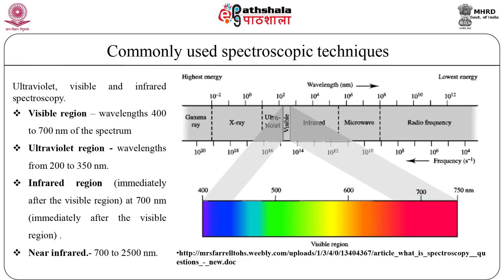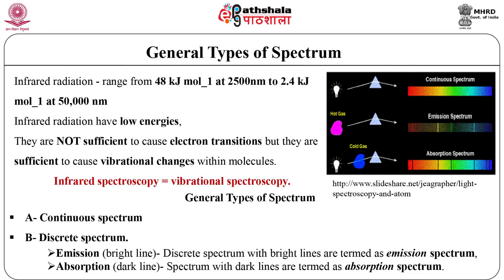Ultraviolet, visible and infrared spectroscopy are the most commonly used spectroscopic techniques today. The visible region spans 350 to 700 nanometers, while ultraviolet radiation is commonly defined as wavelengths from 200 to 350 nanometers. The infrared region starts immediately after the visible region at 700 nanometers; 700 to 2500 nanometers is the near infrared. As infrared radiation has low energies, it is not sufficient to cause electron transitions but is sufficient to cause vibrational changes within molecules. Therefore, infrared spectroscopy is called vibrational spectroscopy.